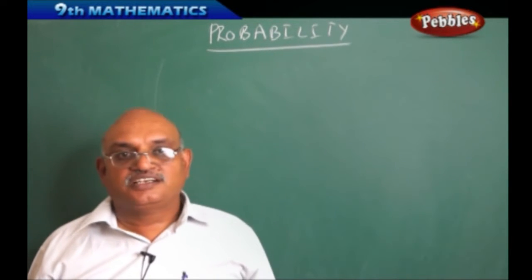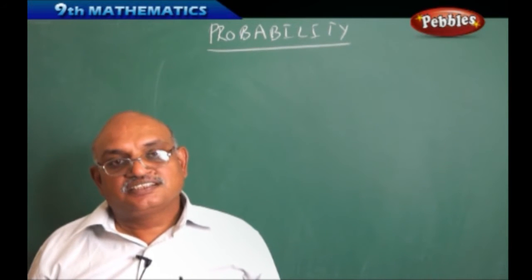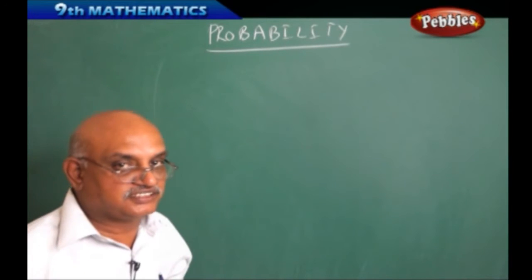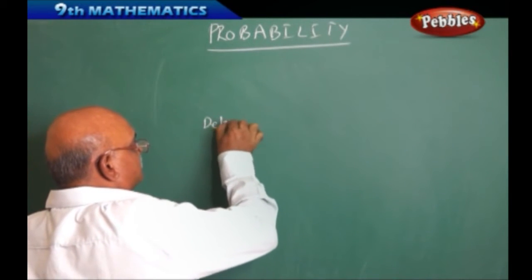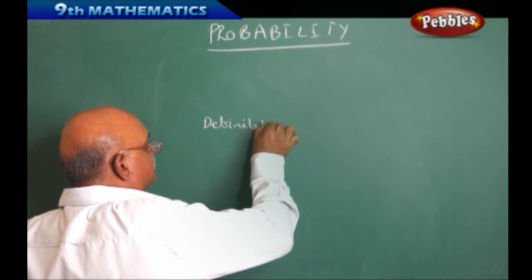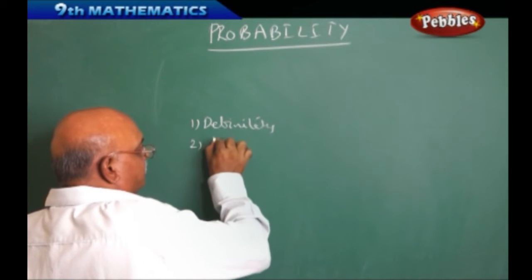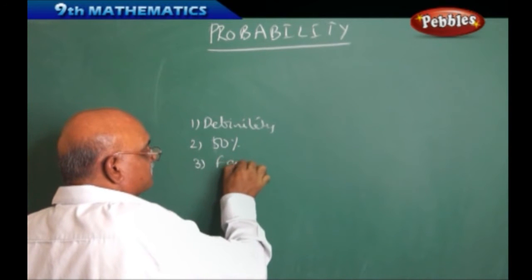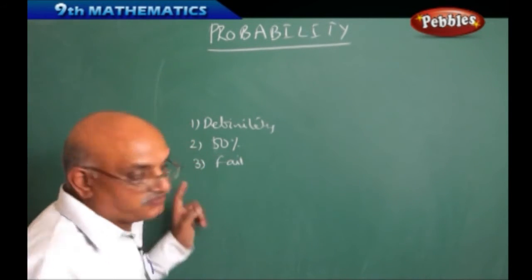What do you mean by happening the things? Suppose as a student you are appearing for an examination. You will say that definitely I am going to pass. These are the general statements the students are giving. Definitely they will pass, or they will say that only 50% chances are there, or they will say that they will fail.